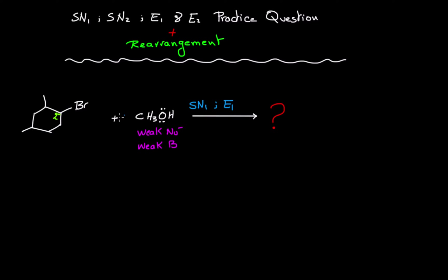SN1 and E1 are two-step mechanisms that share the same first step: formation of the carbocation. This happens via heterolytic cleavage of the bond between the carbon and the bromide, giving us the carbocation. Here we have a methyl and another methyl on the carbocation carbon.